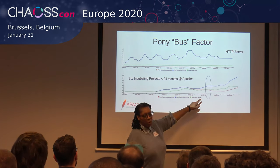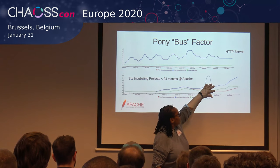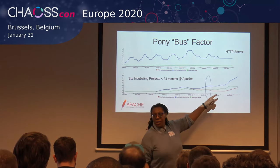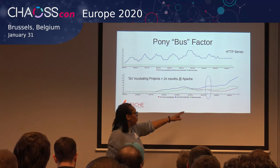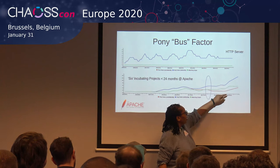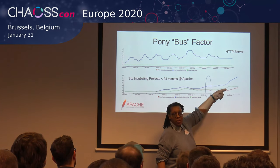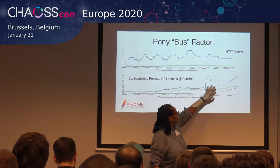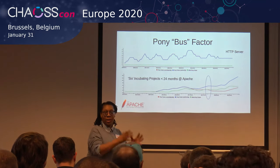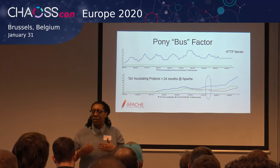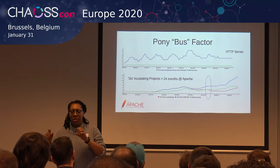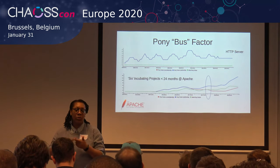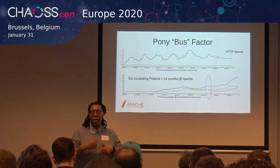Focusing on the pony factor of committership and contributions, you can see there's a point where they start tracking differently. As contributions go up, committership goes up as well — meaning some of these contributors are actually being converted into committers. In Apache terms, that is recognition of merit. If you do something good for the community — whether it's code, event management, or documentation — being made a committer recognizes that merit.